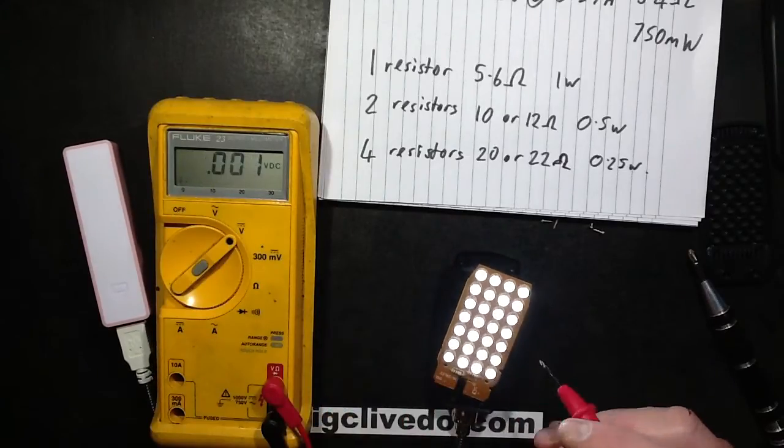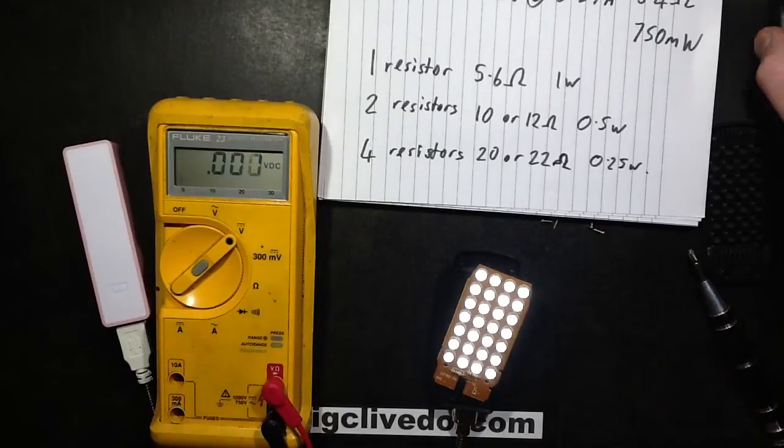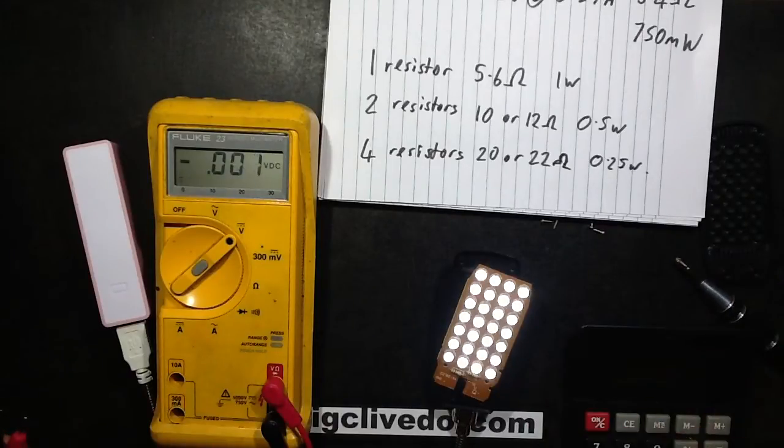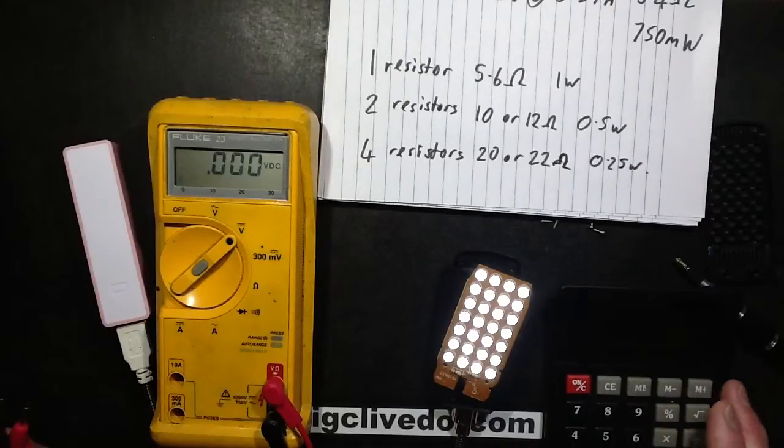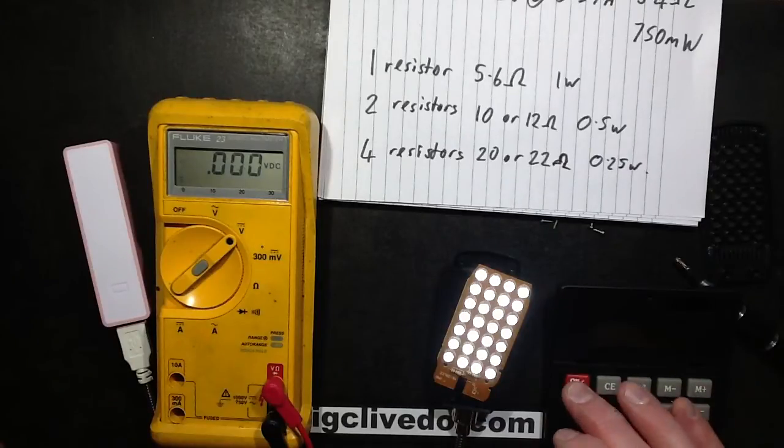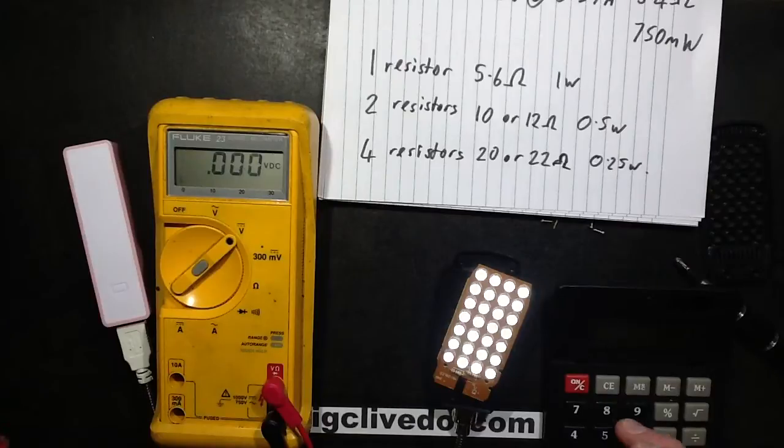So 1.8 volts. The current was 370 milliamps, 0.37 divided by 2, so 0.185.